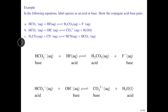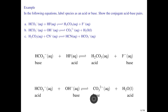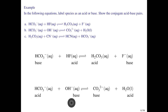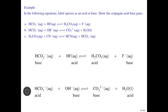In part B, we're dealing with hydrogen carbonate again, but this time it's reacting with hydroxide. Hydrogen carbonate donates a proton to hydroxide, leaving behind carbonate and giving us water. Going in the other direction, a proton is transferred from water to carbonate, giving us hydrogen carbonate and leaving behind hydroxide. Between the two examples, we see that hydrogen carbonate acts as a base in one case and as an acid in the second reaction. Species that can act as either an acid or a base are called amphiprotic.